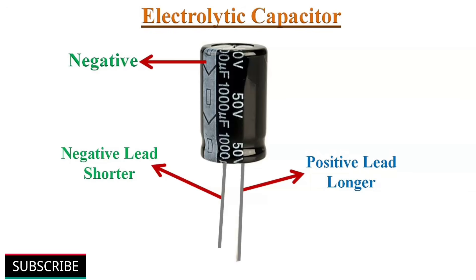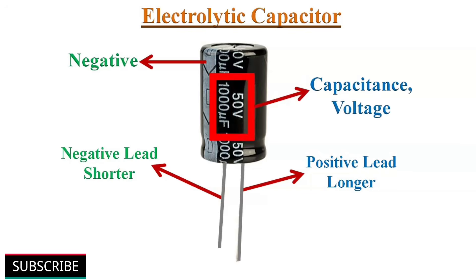Electrolytic capacitors are polarized capacitors. They must be connected in the circuit according to the marking on their case. The stripe marking on the case indicates the negative connection. The capacitance value in microfarads and voltage rating is directly printed on the case.